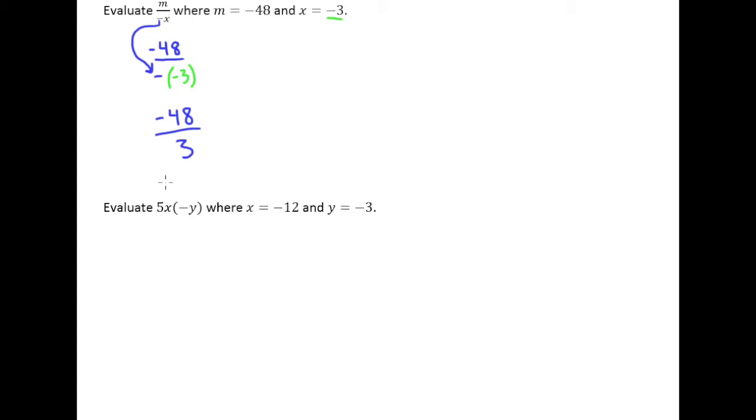So we know the answer is going to be negative. No problem there because it's negative divided by a positive. Go ahead and do our long division. 3 goes into 4 once. We can subtract there and get a 1. Drop down the 8. 3 goes into 18 six times. 6 times 3 is 18. And so our answer is negative 16.